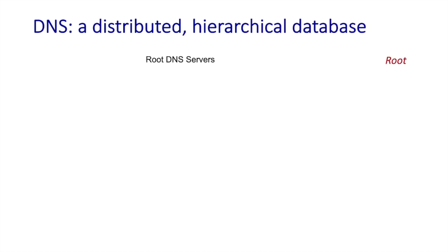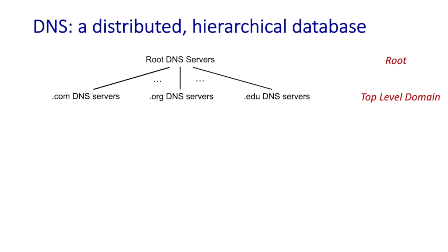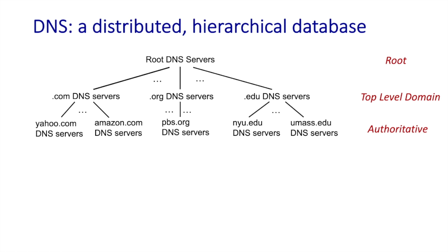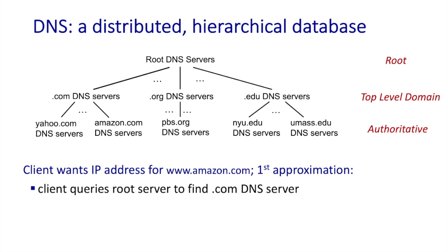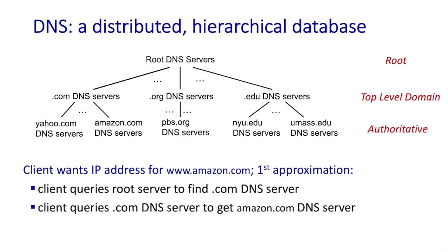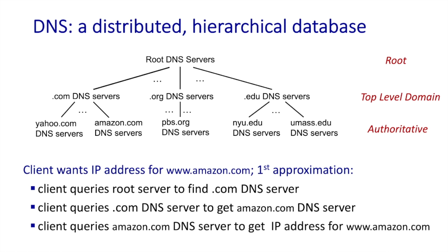The DNS is a distributed hierarchical database. At the root of the tree are the root DNS servers. The next layer contains DNS servers responsible for .com, .edu, or .net domain names — known as top level domain or TLD servers. Then we have authoritative name servers, which have ultimate responsibility for resolving names within their domain, such as umass.edu or nyu.edu. If a client wants to resolve www.amazon.com, it first contacts a root DNS server to get the TLD server for .com, then contacts the TLD server to get the authoritative name server for amazon.com, and finally contacts that authoritative server to get the IP address.